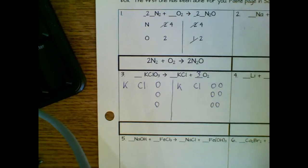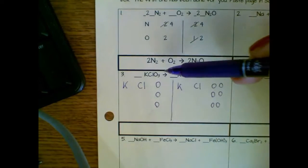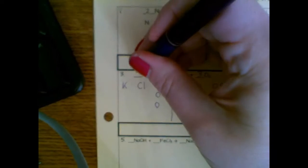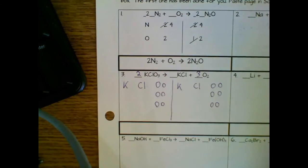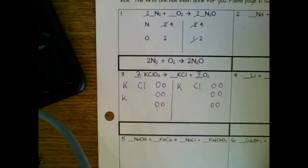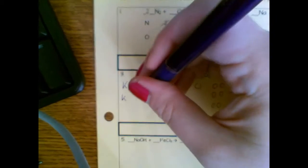Now to get six O's back on the other side, I just need to write in a two because two times three is six. Now the only thing is that putting this two here means that I now have two K's and I have two CL's also.